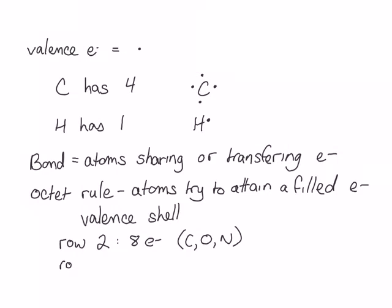Row 1 elements, which is mainly hydrogen, will try to attain a filled shell of 2 electrons. These atoms will try to attain a filled shell either by sharing electrons with another atom, or by taking electrons through transferring from another atom.